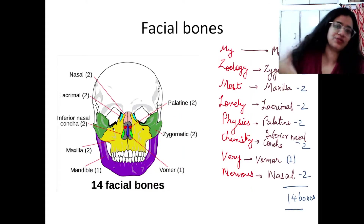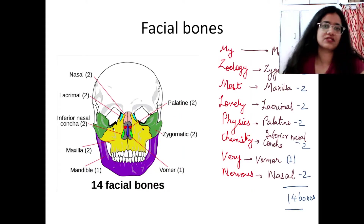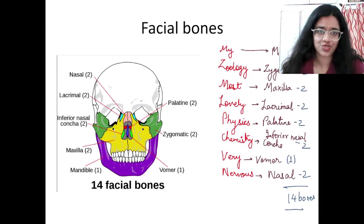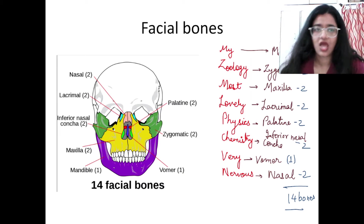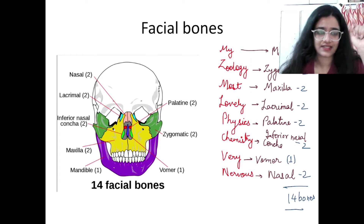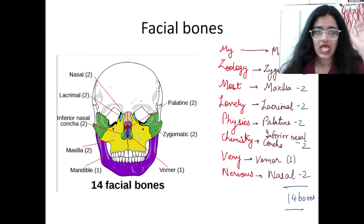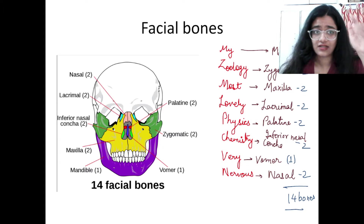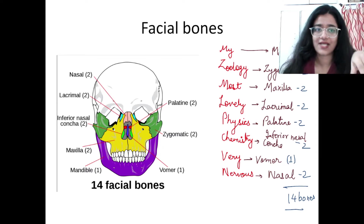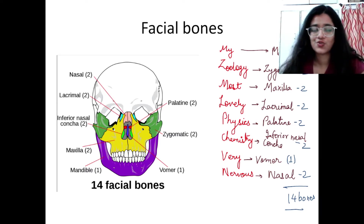For facial bones, the mnemonic is: 'My Zoology Most Lovely Physics Comes Through Very Nervous' — standing for mandible, zygomatic, maxilla, lacrimal, palatine, inferior nasal concha, vomer, and nasal. In this category only two bones are single: mandible and vomer, and the rest are paired.